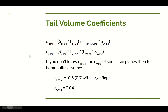To find appropriate tail volume coefficients, the approach is to calculate them from existing airplanes similar to yours. The equations are rearranged versions of those we just saw. Raymer provides a rule of thumb for home-built-sized airplanes of typical configurations: use a horizontal tail coefficient of 0.5 and a vertical tail coefficient of 0.04. For airplanes with large flaps — roughly flaps spanning more than half the wing and at least 25% of the chord — the horizontal tail coefficient should increase to around 0.7.